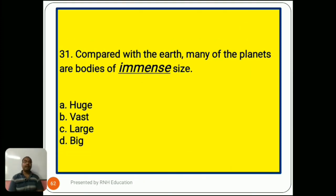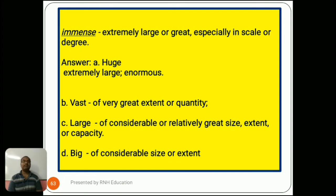Question number 31: 'Compared with the earth, many of the planets are bodies of immense size.' Options are A) huge, B) vast, C) large, D) big. Immense means extremely large or great, especially in scale or degree. The right answer is A) huge, meaning extremely large or enormous. Option B, vast, means of very great extent or quantity. Option C, large, means of considerable or relatively great size, extent, or capacity. Option D, big, means of considerable size or extent.